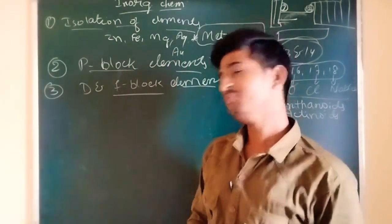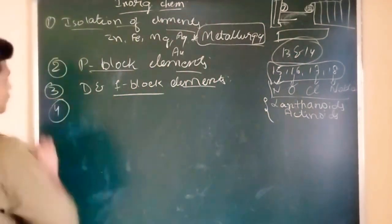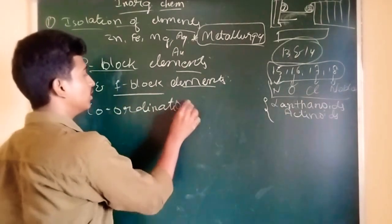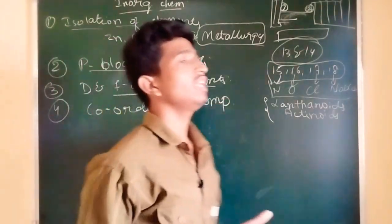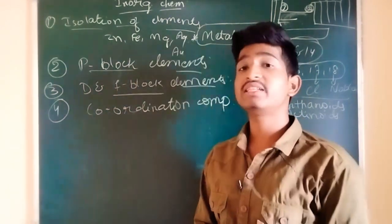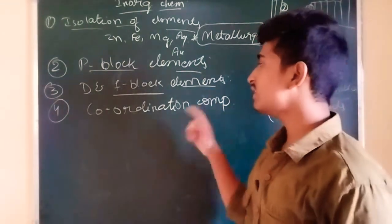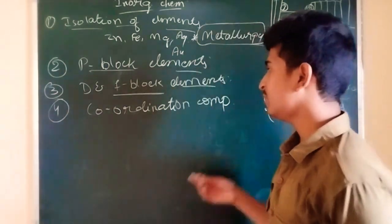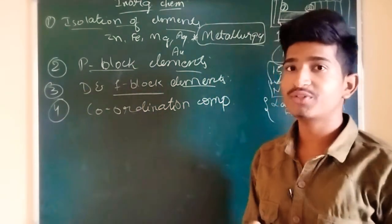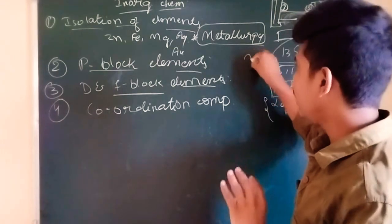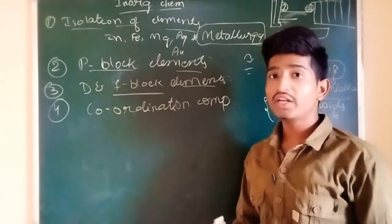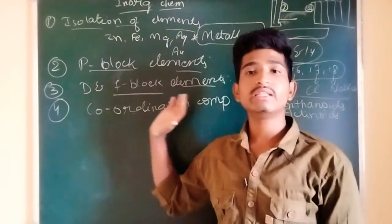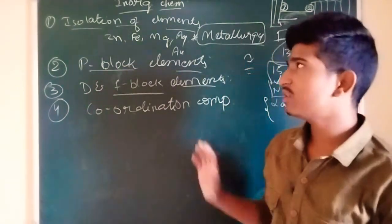I will come with tips to remember those things. The next chapter in inorganic chemistry is coordination compounds — a simple chapter. Just as we studied chemical bonding in class 11, here we study how bonding takes place between compounds to form coordinate bonds. Some theories describe coordination compounds. We have studied ionic bonds and covalent bonds, but we have not studied coordination bonds — that you will study here. These are the four chapters from inorganic chemistry.